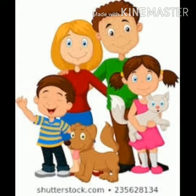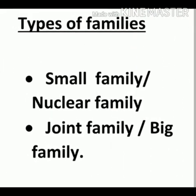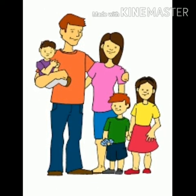They all are the members of our family. There are two types of family. One is small family or nuclear family. The second one is joint family or big family. Small family means where parents and their children live together. A joint family means where parents, uncles, aunts, cousins, and grandparents live together.